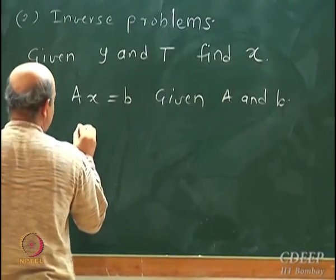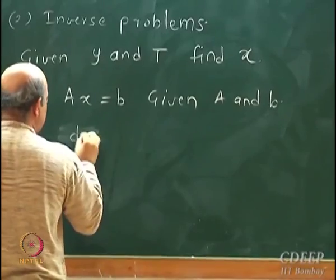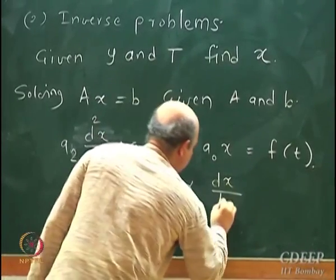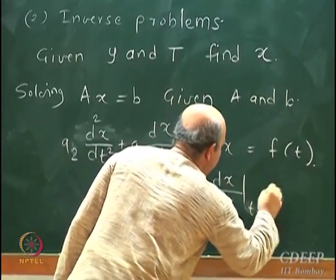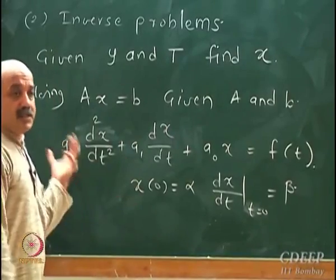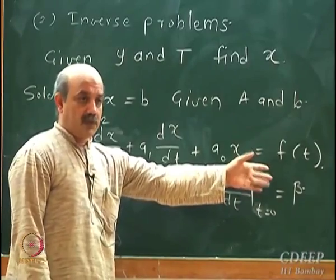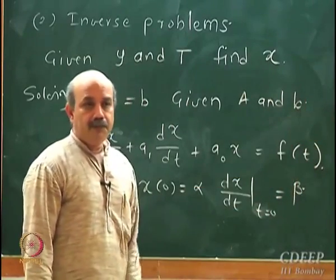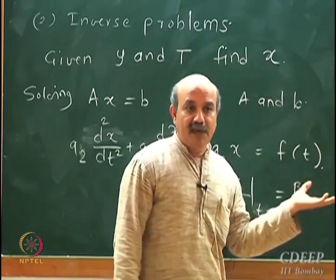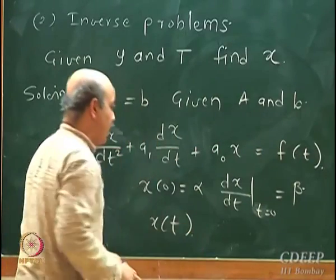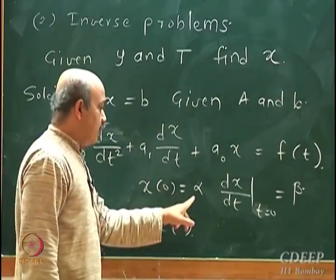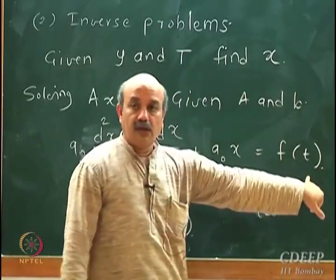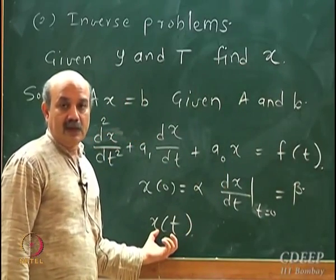We are given some differential equation. The other classical problem is the ODE initial value problem. We are given a differential equation — that is the operator. We are given F(t), which is the vector in the range space. I want to find out the solution X(t) which satisfies the conditions that the initial value equals alpha and the initial rate equals beta. I am given two initial conditions, the operator, and the vector in the range space — I want to find out X(t): an inverse problem.